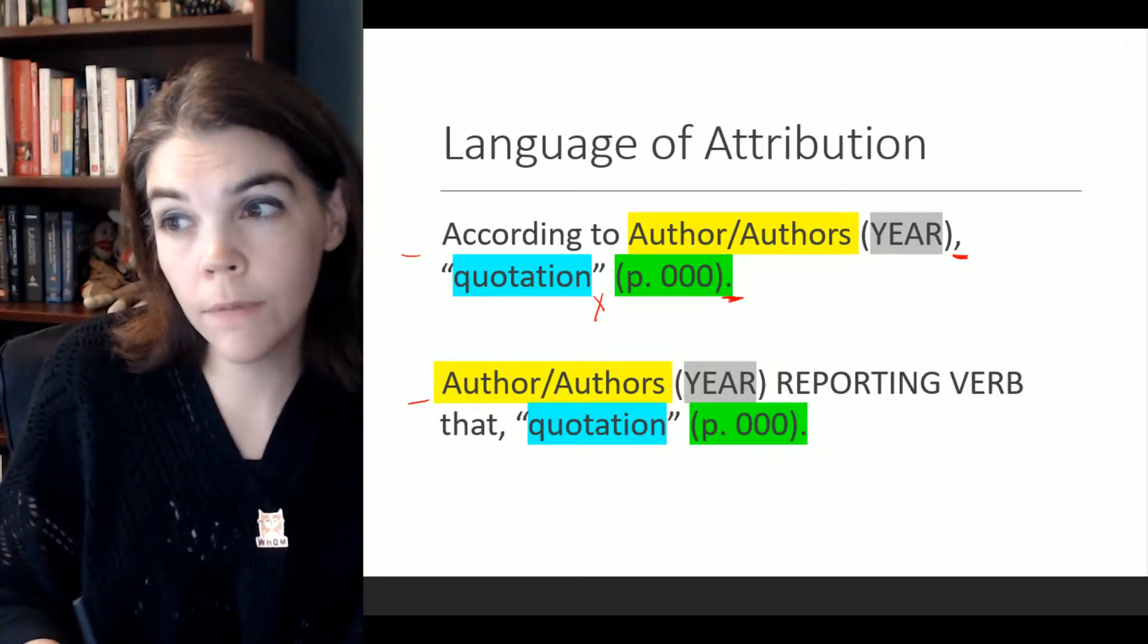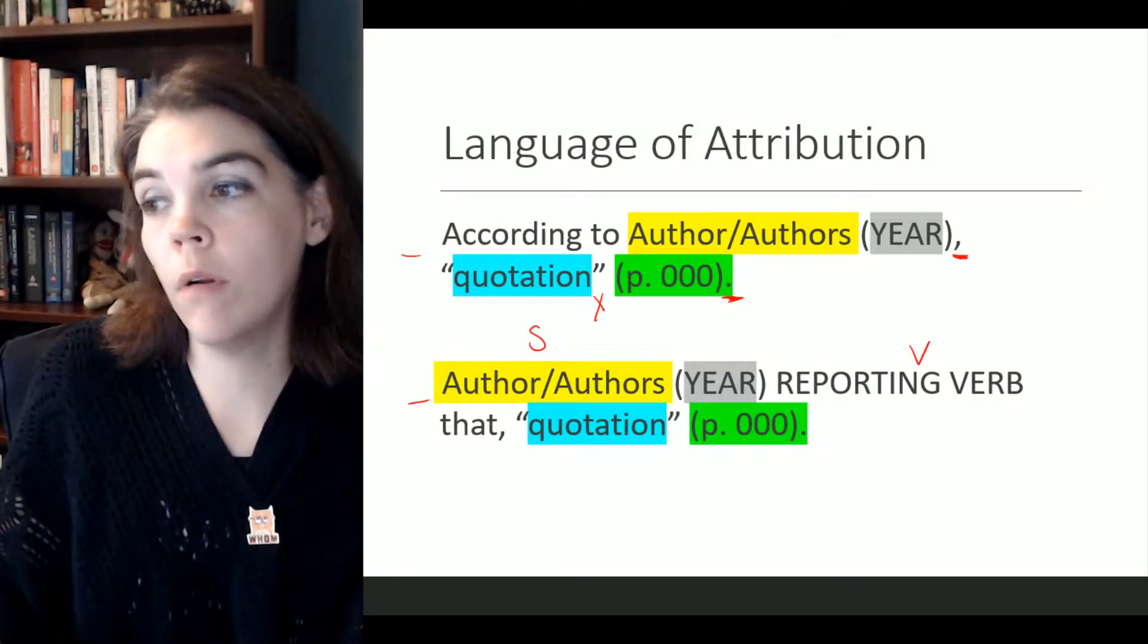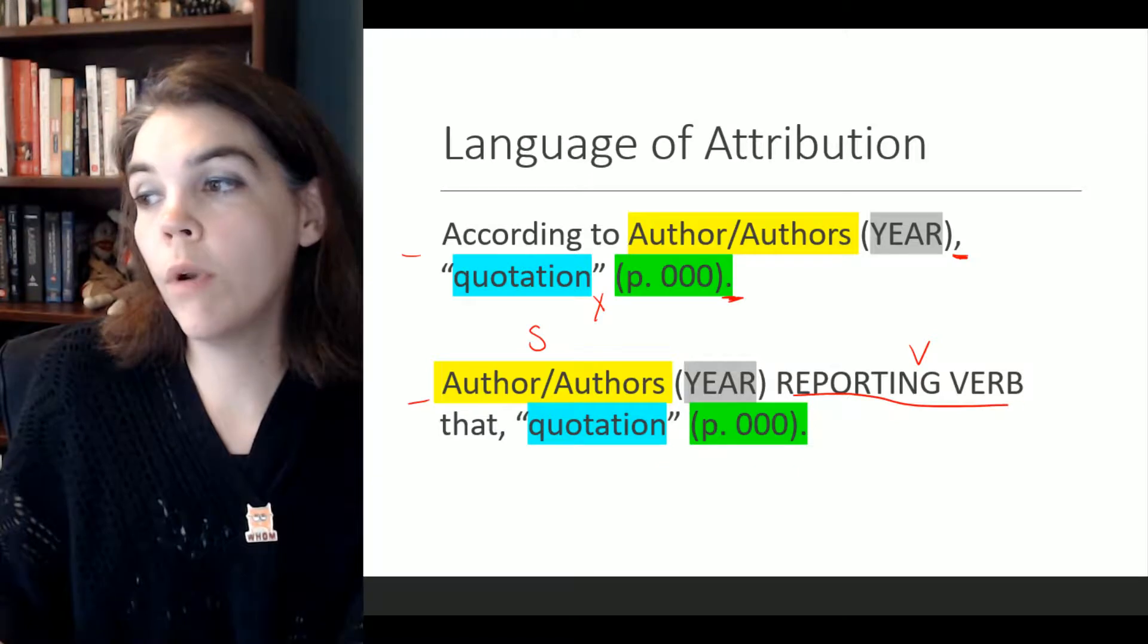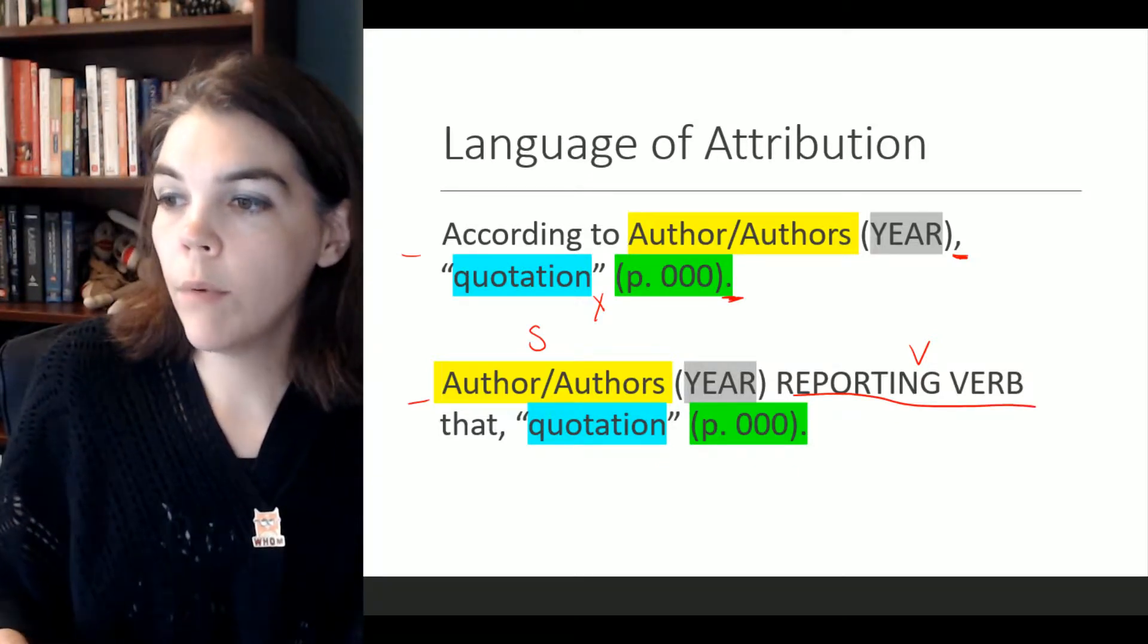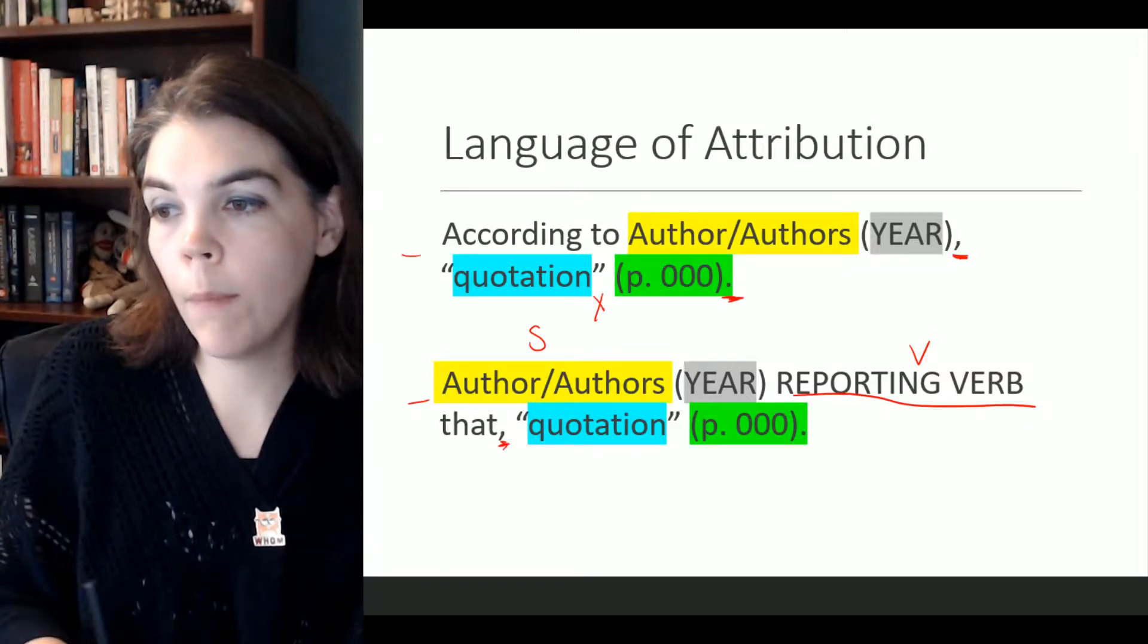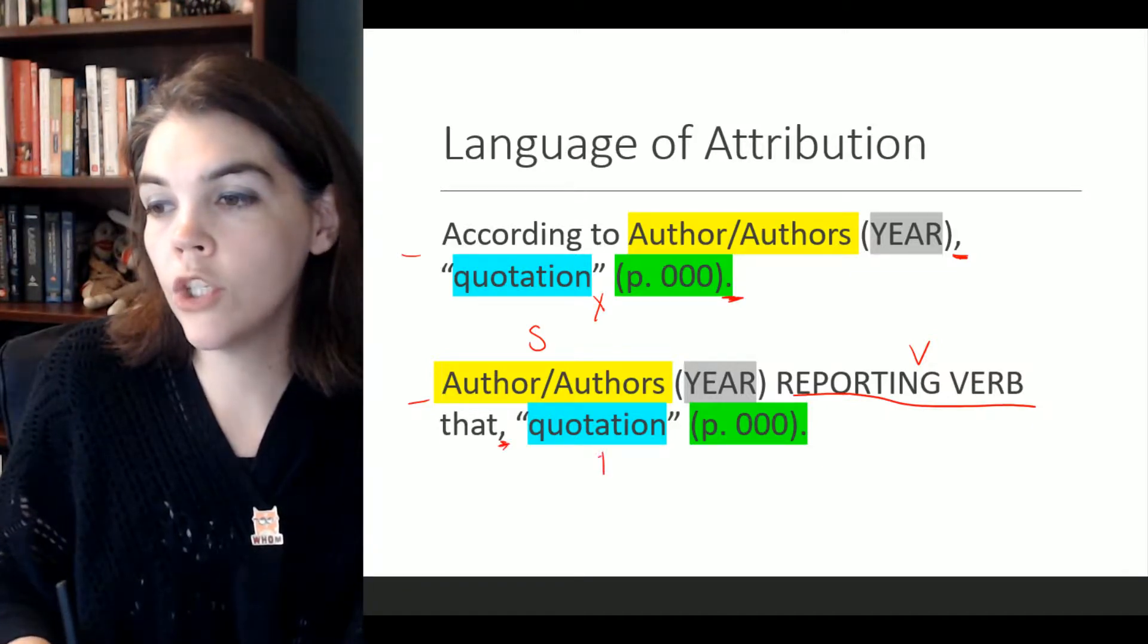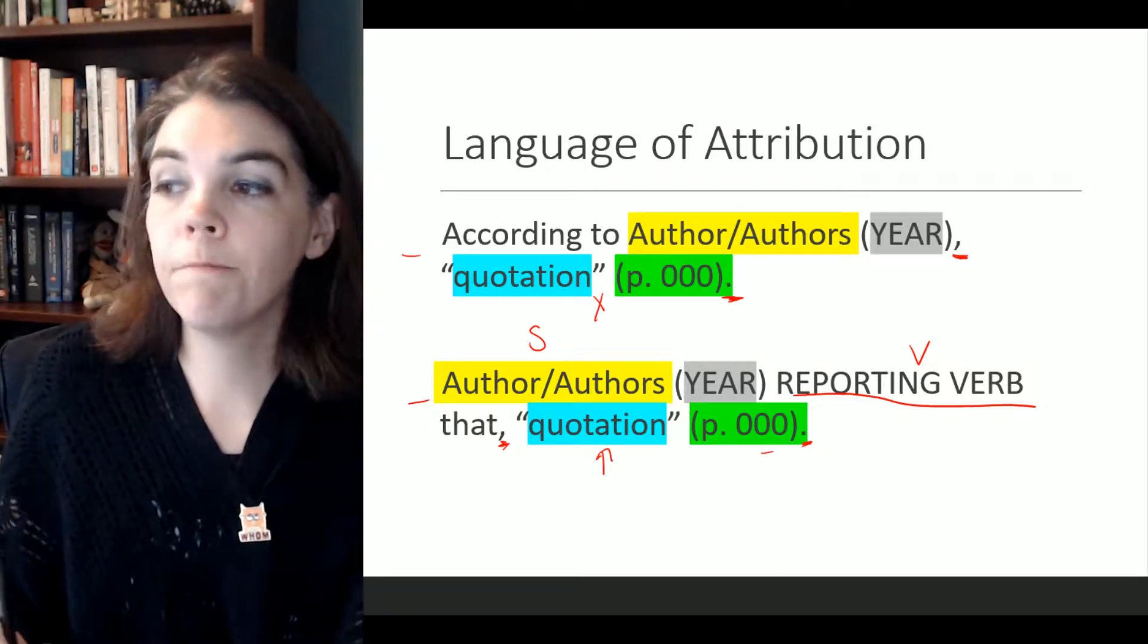Same here if we want to open and with the sentence with the authors and we want to make them the subject. So here they'd be the subject, then we need a verb. We need to have a reporting verb, and I'll talk about what that means. We need to have a reporting verb, then comes our comma, then our quotation, page number, period there.